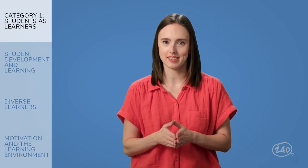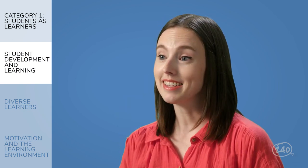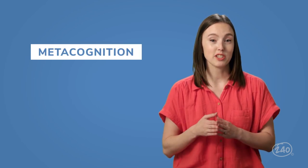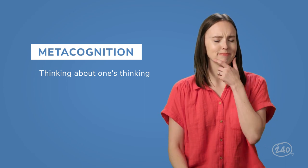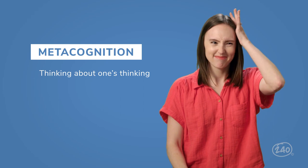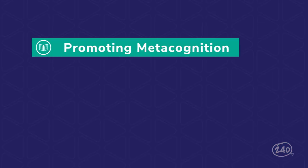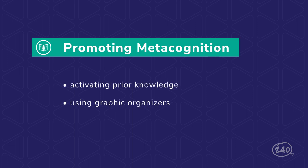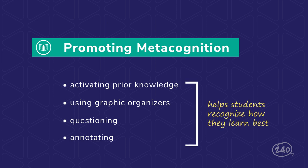Let's look at some topics you're most likely to see in Category 1, starting with Student Development and Learning. An important part of teaching goes beyond sharing specific content knowledge and focuses on teaching students how to learn. As their brains continue to change and develop, students need continued support on how to use them. Teachers should help students develop metacognition, which is the process of thinking about one's own thinking. There are several strategies teachers can use to facilitate metacognition, such as activating prior knowledge, using graphic organizers, questioning, and annotating. The most important thing to know about metacognition is that it helps students recognize how they learn best. Teachers should guide students through thinking about their own thinking while using these strategies.